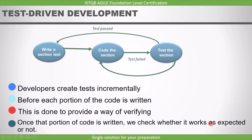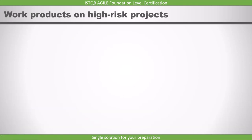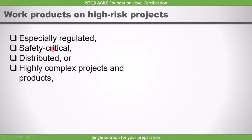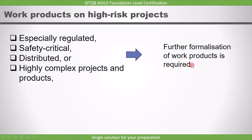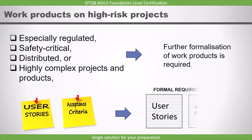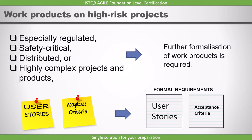The last point is work products on high-risk projects. In some Agile implementations, especially regulated, safety-critical, distributed, or highly complex projects and products, further formalization of work products is required. For example, some teams transform user stories and acceptance criteria into more formal requirement specifications. How to do formalization is not part of the syllabus. You just need to remember that more formalization of work products is required in case of safety-critical projects.